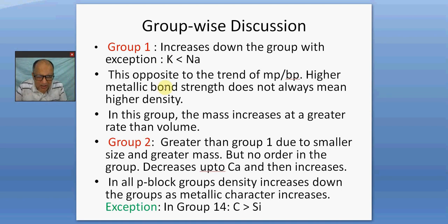The only exception is potassium is slightly lighter than sodium. That is the only exception. Otherwise it goes on increasing. Cesium is the heaviest and lithium is the lightest alkali metal. In group 2, in general they are heavier than alkali metals because their sizes are less and their masses are greater. So they have greater densities in general. But the trend along the group is very irregular. It decreases up to calcium, thereafter increases. So no convincing explanation can be given from my side at least.